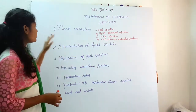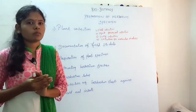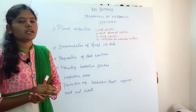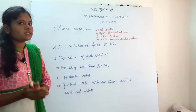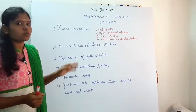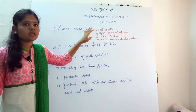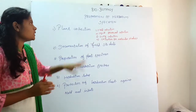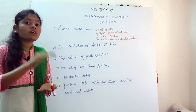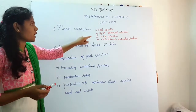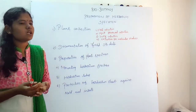First step: plant collection. There are 4 types we can collect and preserve. First, field collection. Second, liquid preserved collection. Third, living collection. Fourth, collection for molecular studies. Field collection we can preserve on a herbarium sheet, and liquid preserved collection we can collect in herbarium jars, along with living collection and collections for molecular studies.